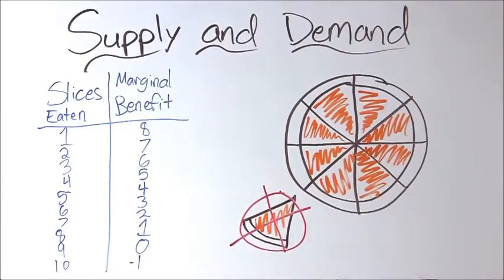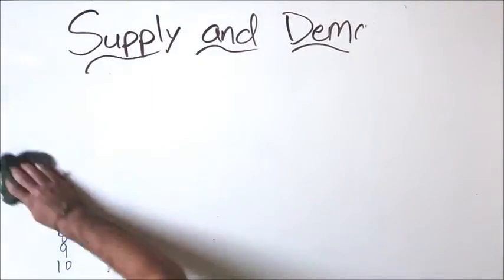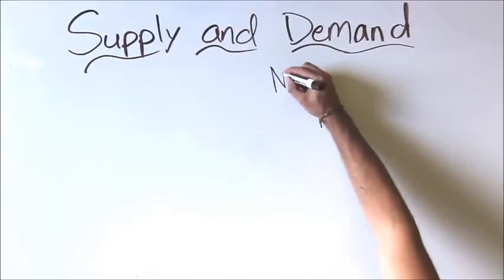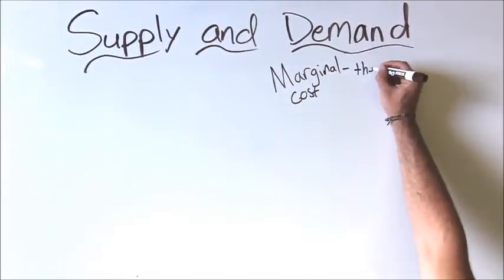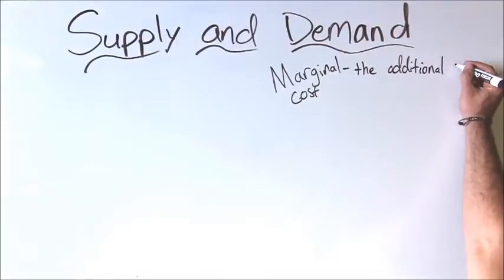Up until this point, we haven't considered the cost to the consumer or producer for each slice of pizza. Similar to marginal benefit, marginal cost is the additional cost of producing one more unit of a good or service.